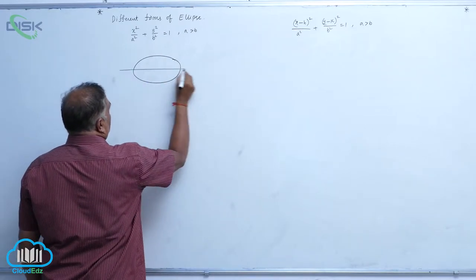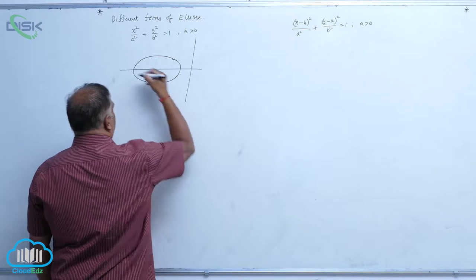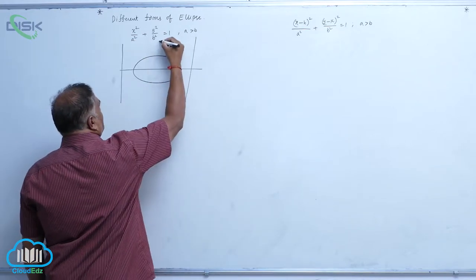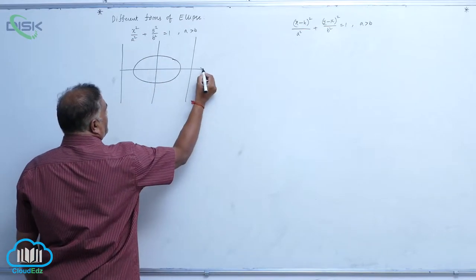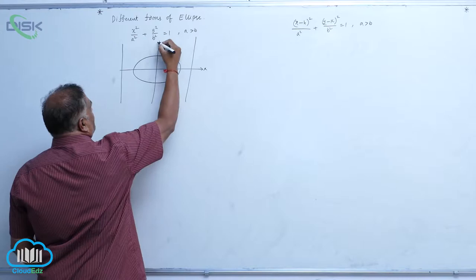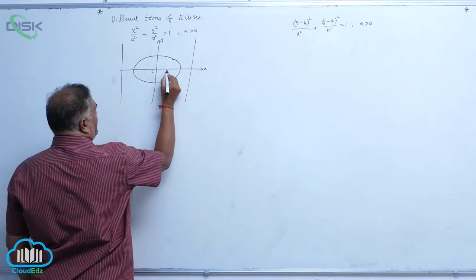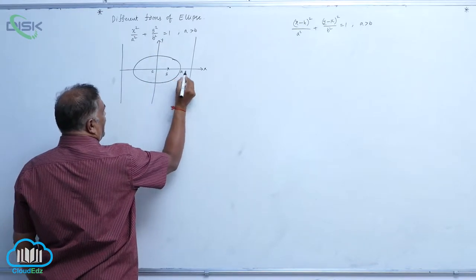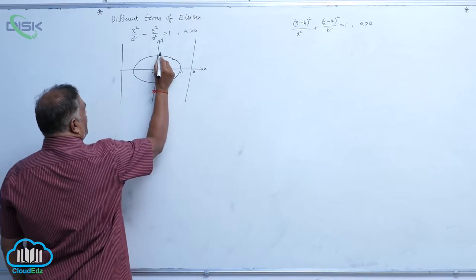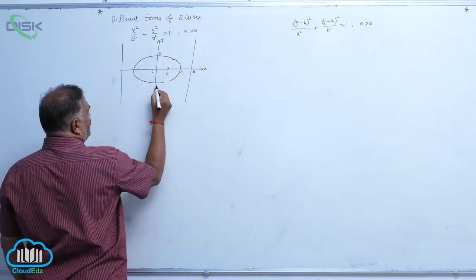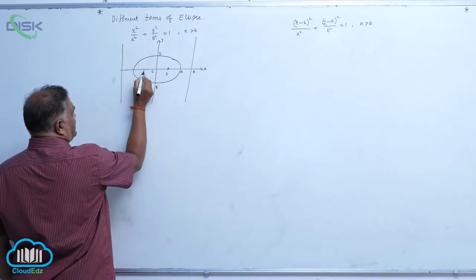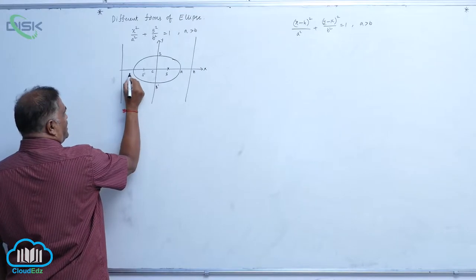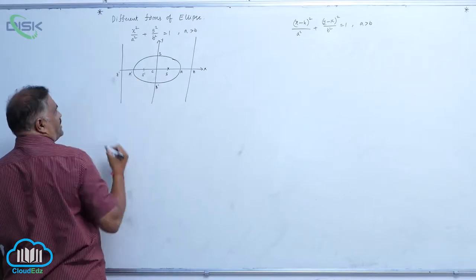On the diagram, we have the first directrix, second directrix, and y-axis. The labeled points are: x, y, c, s, a, z, b, b', s', a', and z'.